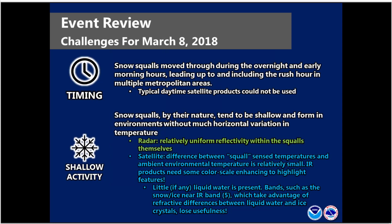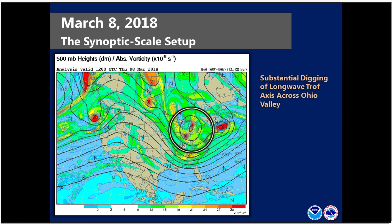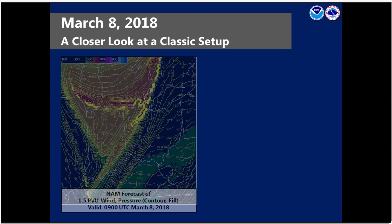I already went through the synoptic scale setup, so I won't spend too much time on this, but you do have substantial digging of a long-wave trough axis across the Ohio Valley. More importantly, you have an embedded, potent shortwave max pivoting around the upper-level low, corresponding to a distinct PV anomaly on the 1.5 PVU surface. This is a NAM forecast of 1.5 PVU wind and pressure at 9Z on March 8th. What we want to highlight are the gradients — there are two distinct areas of sharp pressure gradients on the 1.5 PVU surface that will serve as a focused area for forcing to help initiate and maintain these snow squalls as they progress through the area.